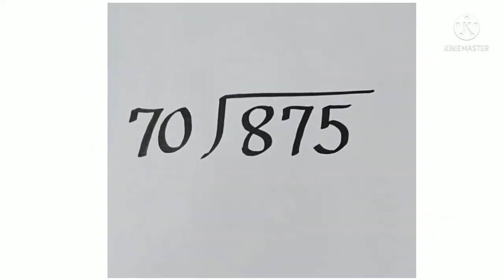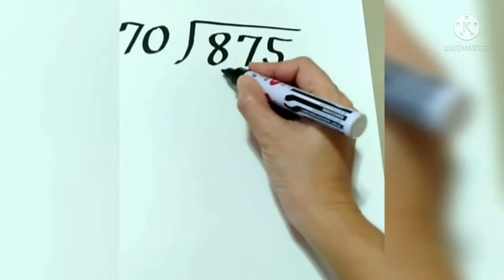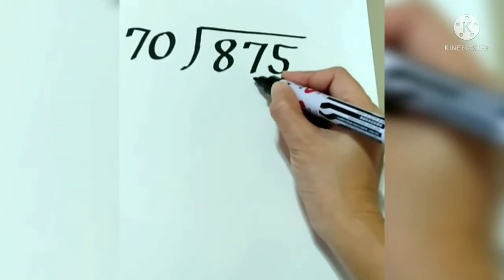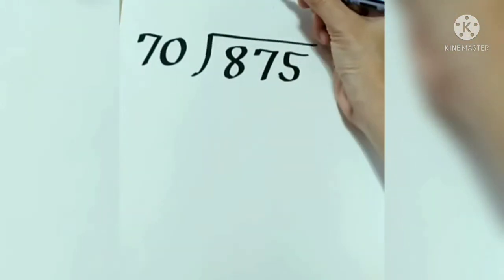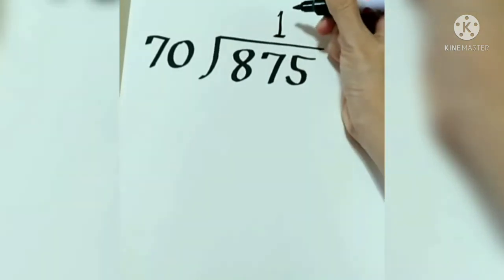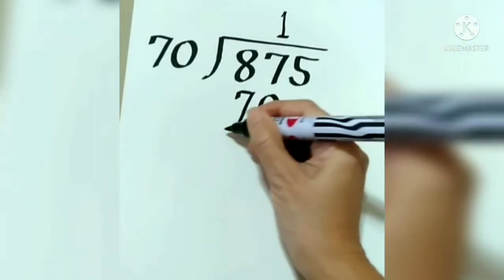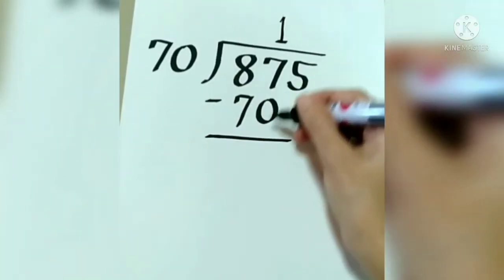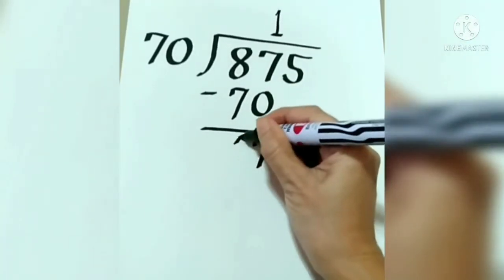Subukan nga ulit natin, mga bata. Unahin natin ang 8 divided by 70 is cannot be. So, gawin na natin 87 divided by 70. 87 divided by 70 is 1. 1 times 70 is 70. 7 minus 0 is 7. 8 minus 7 is 1. Bring down 5.